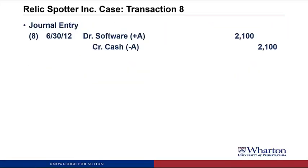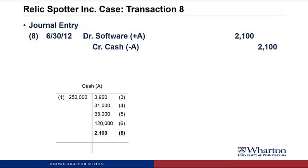We post this journal entry to T-accounts by putting another credit on the right-hand side of the cash account and creating a new T-account for the software asset.